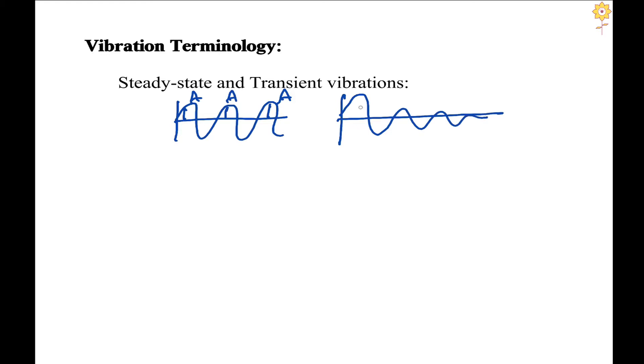Now we continue with the vibration terminology. Steady state and transient vibrations. Steady state vibrations are those where the amplitude in each cycle remains the same.